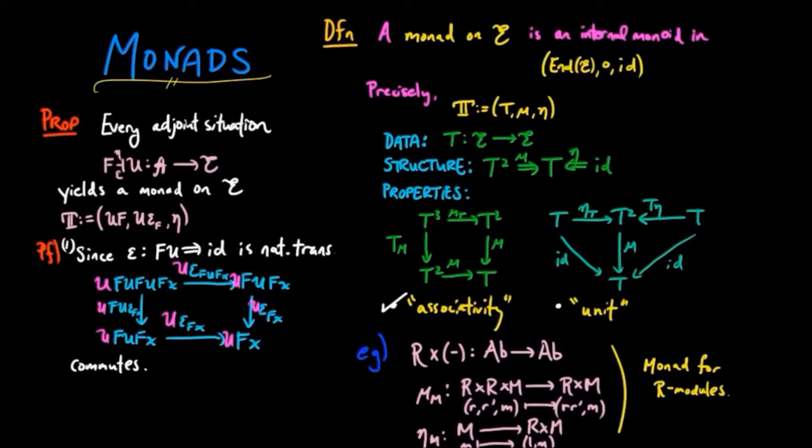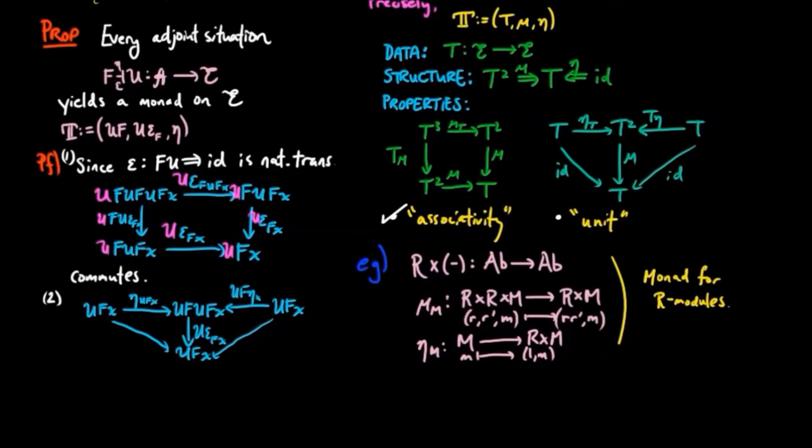Secondly, we want to verify the unit law. And so what we do is we take the unit and we apply it on the left and on the right of our functor T, which is UF. And then we take the multiplication, which is U epsilon FX. And we want to verify that these two triangles actually give us the identity.